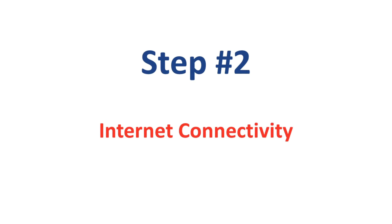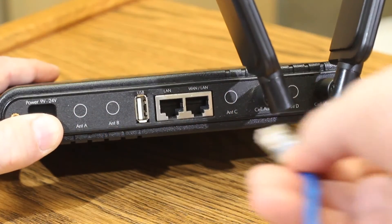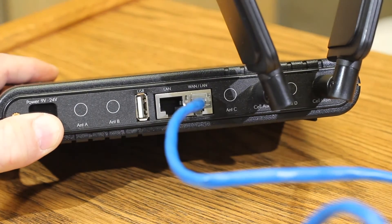Step 2: Internet connectivity. If you're using cellular connectivity for the internet, it's likely your supplier has already configured the gateway for immediate use. Otherwise, take a look at the included quick start guide for configuration details. If you are using Ethernet connectivity for the internet, plug one end of the Ethernet cable into the gateway connector labeled WAN/LAN. If your network supports dynamic IP addresses, or DHCP, connect the other end of the Ethernet cable to your internet router or hub.